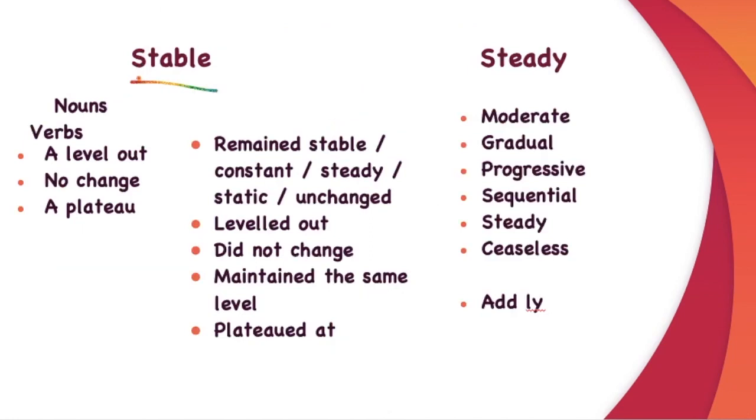If there is no change, or if the change is stabilized, these are the nouns: a level out, no change, a plateau. Verbs are remain stable, remain constant, steady, static, unchanged, leveled out, did not change, maintain the same level, plateaued at. And if there is a steady change: moderate, gradual, progressive, sequential, steady, ceaseless. Now if you add ly to it, it will become an adverb. So it changed or it rose moderately, increased gradually, progressively, sequentially, steadily, ceaselessly and so on.